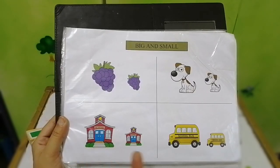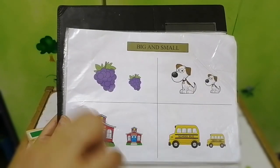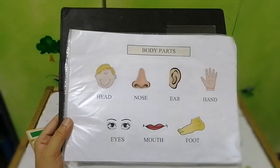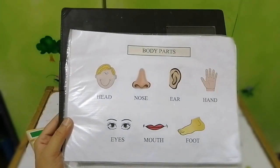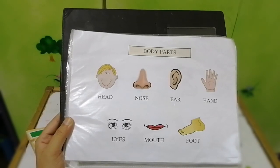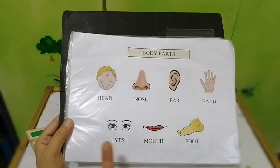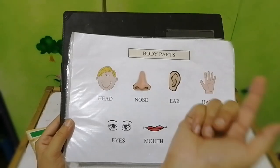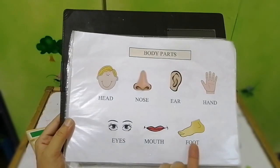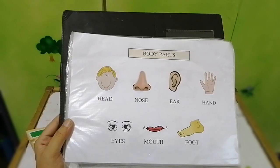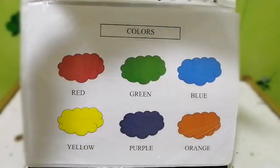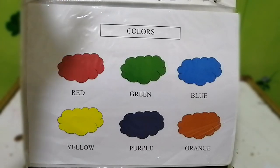On the next page we have the big and small concept. On the next page we have body parts — you can ask different questions from your child, like how many eyes do you have, how many fingers on your hand, how many feet, ears, nose, and so on. Then we have basic colors introduced to kids with their names.